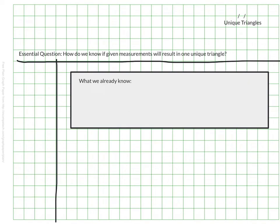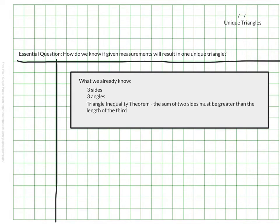We already know certain things that must be true in order to create a triangle. For example, the triangle must have three sides, and therefore it also has three angles. We also know the triangle inequality theorem, which tells us that if we add two of the smaller sides, we get a number greater than the third side. And the angles within the triangle must add up to a total of 180 degrees.